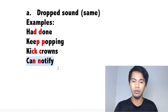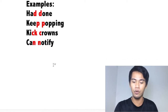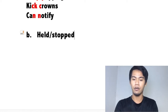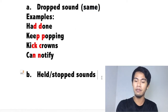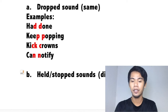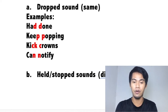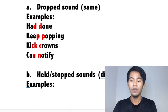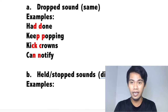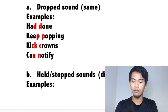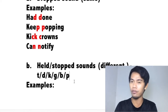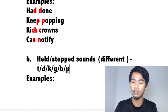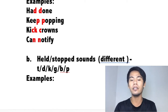Next rule under consonant plus consonant: held or stopped sounds. Review — under dropped sounds, the consonant sounds should be the same. But with held sounds, the consonants are different from each other. Now, there are only certain consonant sounds that you can stop or hold: T, D, K, G, B, and P. These sounds can be held. But other consonant sounds cannot be held — you must pronounce them.